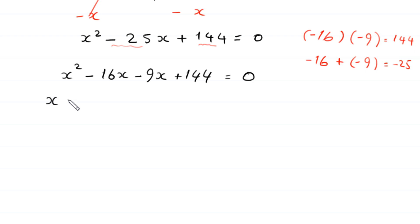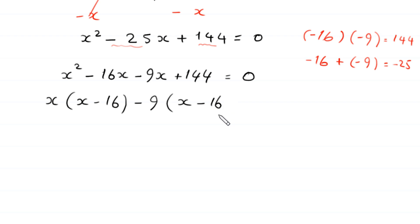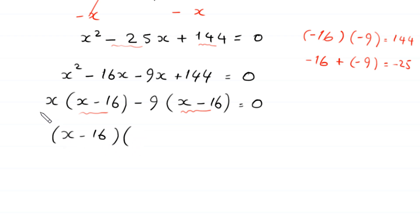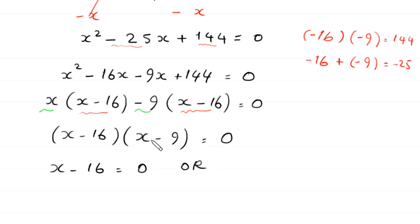From the first two terms we can factor out x, giving x minus 16, and from the last two terms we factor out negative 9, leaving x minus 16. Since x minus 16 is common, we factor it out, giving x minus 16 times x minus 9 equals 0. From here, either x minus 16 equals 0, giving x equals 16, or x minus 9 equals 0, giving x equals 9. So we have two values of x.